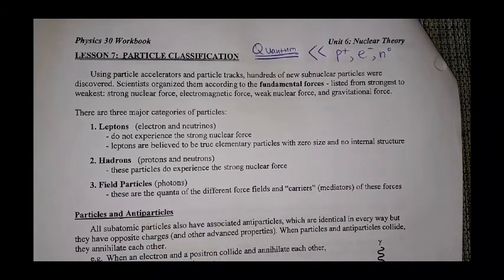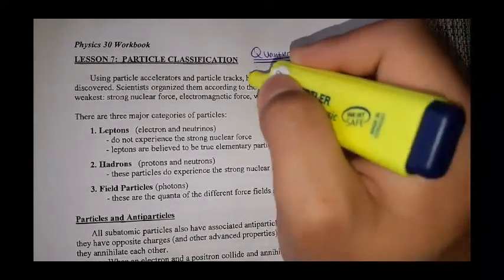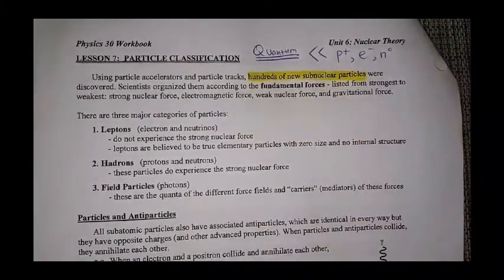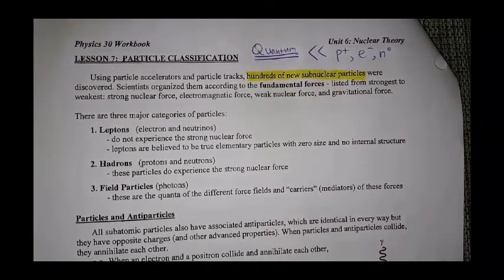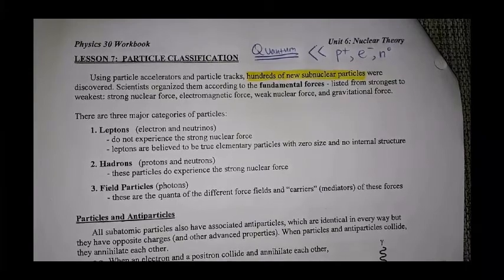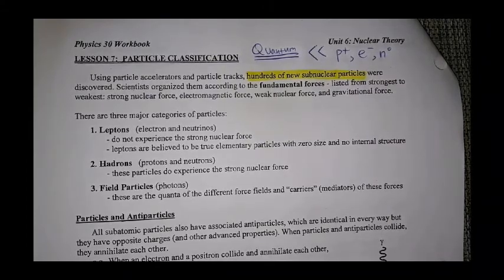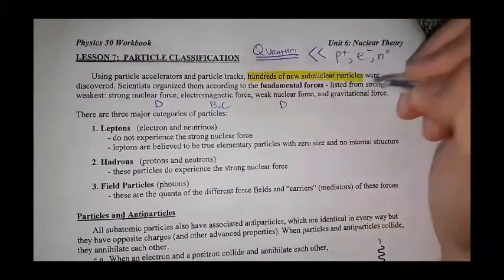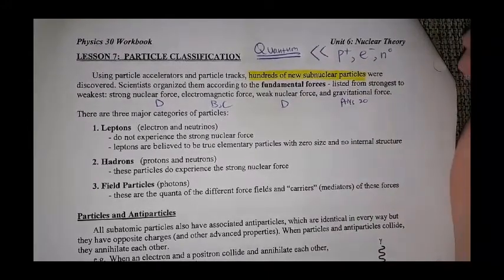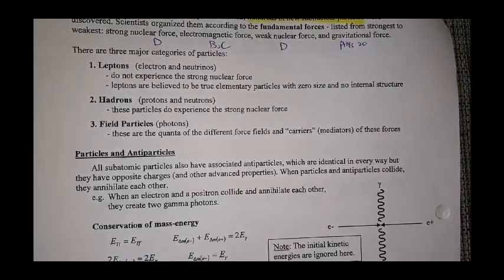So last class we talked about particle accelerators and particle tracks. First of all, scientists found that there are hundreds of new subnuclear particles from it. So we are no longer talking about alpha beta. We actually go quite more detailed and scientists organize them according to their fundamental forces from strongest to weakest. They've listed as strong nuclear force is the strongest, followed by electromagnetic force, weak nuclear force, and gravitational force. So this is Unit D, that's Unit B and C, weak nuclear force Unit D. This is Physics 20 if you recall what those forces are.